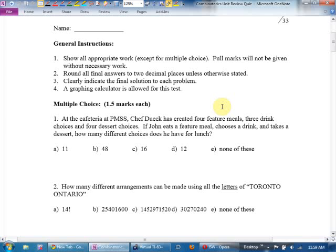The word arrangement is a trigger word for a permutation, unless it says unordered arrangement. That's a combination. But the word arrangement is also one that I would use as a trigger phrase. So let's try a few of these. Multiple choice, one and a half mark each for some reason, just like the provincial exam. Why do they do that? I don't know.